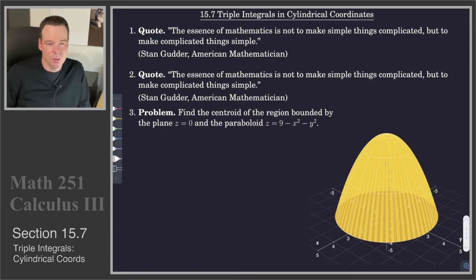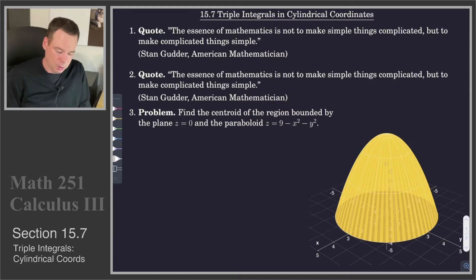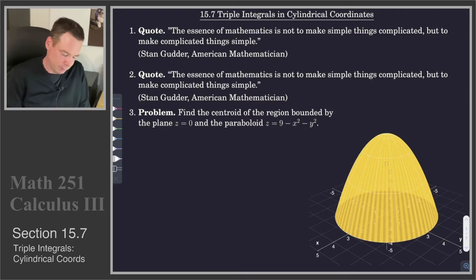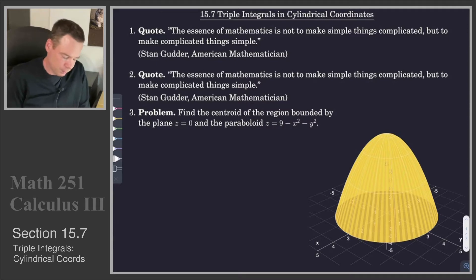So we're still describing points in three-dimensional space, it's just instead of using Cartesian or rectangular coordinates for all coordinates, we're going to use polar in the plane and a Cartesian coordinate for the height or the z-coordinate. Why would we use such a coordinate system? Well, let's look at a motivating example. We want to find the centroid of the region bounded by the plane and the paraboloid.